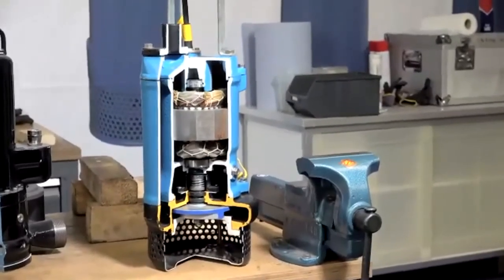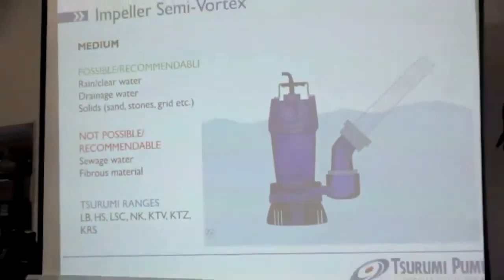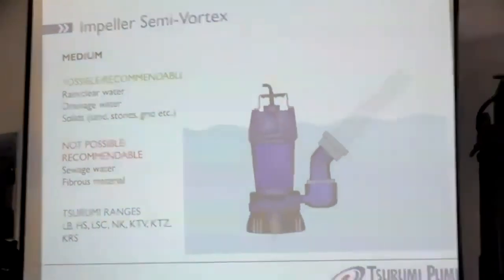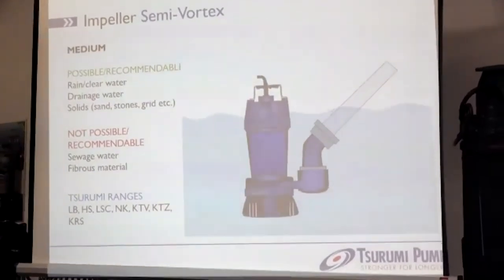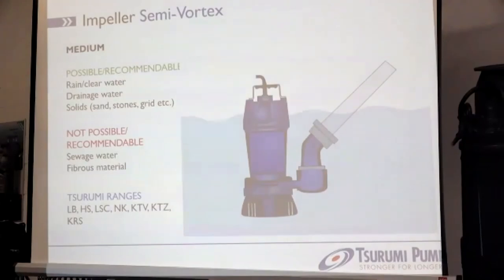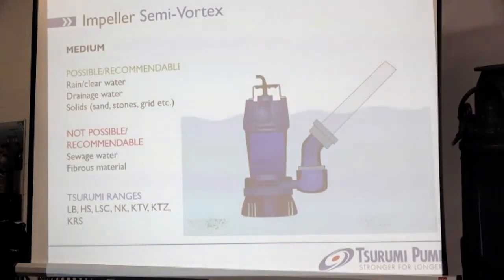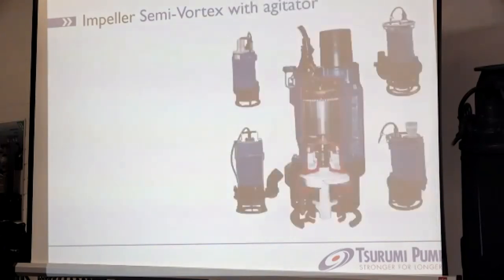Cerumi ranges that come with this type of construction are more or less all of our contractor pumps: beginning with the small LB and HS, continuing through the LSC, and then all the classical contractor pumps without agitator — NK, KTV, KPZ, KRES ranges.